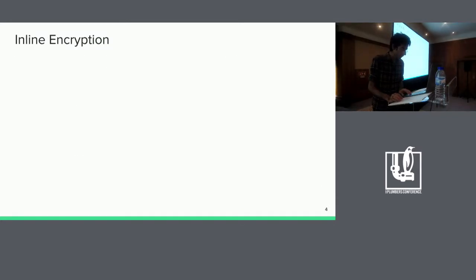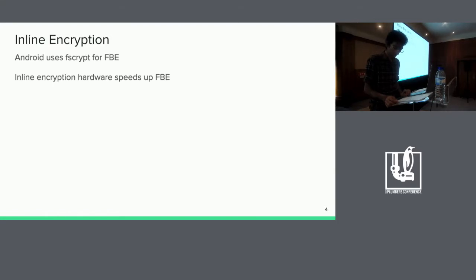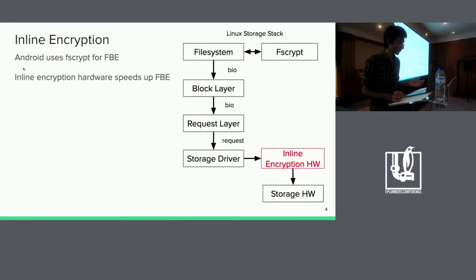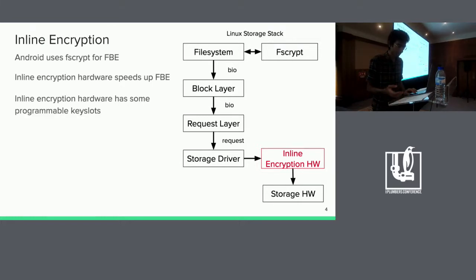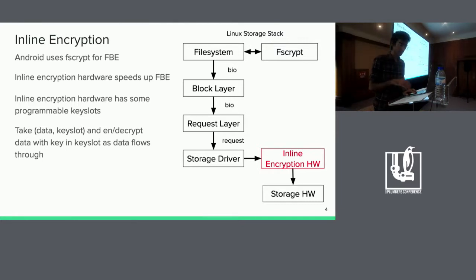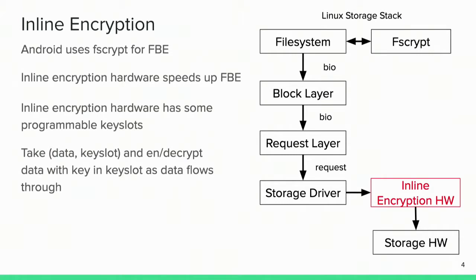Now, on to inline encryption. On Android, we make use of FSCrypt to support file-based encryption. Inline encryption hardware is a way to speed up encryption with FBE. With inline encryption hardware in the picture, the hardware sits right before the storage hardware and it can encrypt or decrypt data flowing through it. Inline encryption hardware has a small number of programmable key slots, and each key slot can be programmed to hold an encryption context. Any data request that flows through inline encryption hardware can be tagged with a key slot, and the hardware will encrypt or decrypt that data with the encryption context programmed into that key slot. This makes inline encryption hardware well suited to accelerate FBE and offload FBE-related work from the CPU.